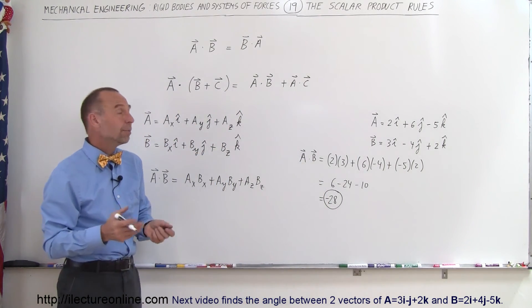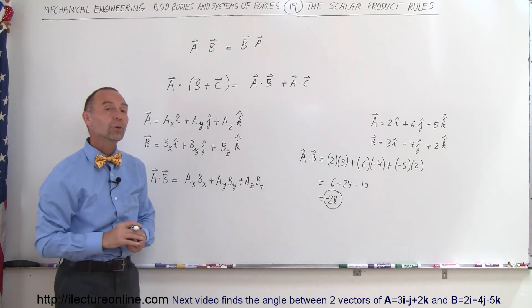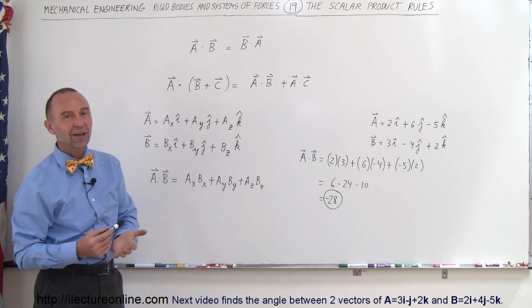So if you don't know the angle between them, but you do know the X, the Y, and the Z components, there's another way in which we can find the dot product or the scalar product of two vectors, and that's how it's done.